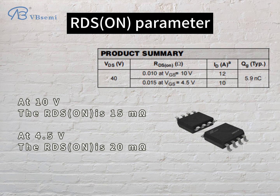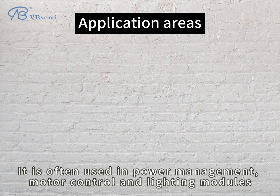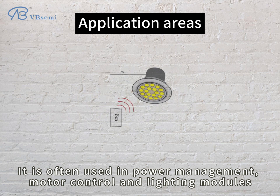At 4.5V, the RDS(on) is 20mΩ. The 04884VB MOSFET is a high-power N-channel MOSFET for applications requiring high-power switching and control. It is often used in power management, motor control, and lighting modules.